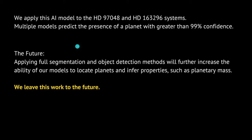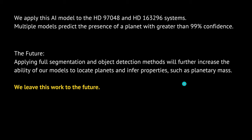They used an Adam optimizer with gradient scaling and cross-entropy loss — all the standard methods from two to three years ago in AI. These models work and give great results. They got planet detections with greater than 99% confidence, confirmed by empirical observations. But they recognize they are right at the beginning: for the future, applying full segmentation and object detection methods would further increase the models' ability to locate planets and potentially determine internal parameters like planetary mass — they leave this work for the future.